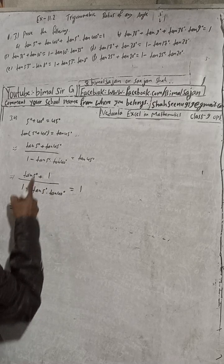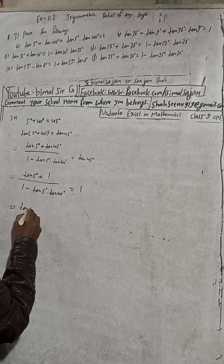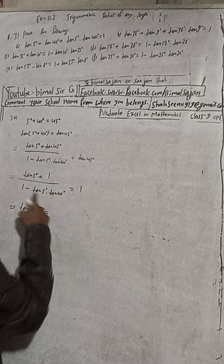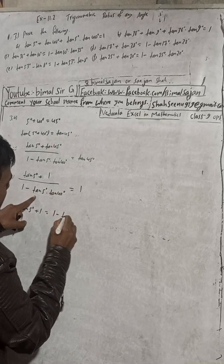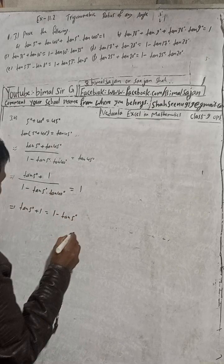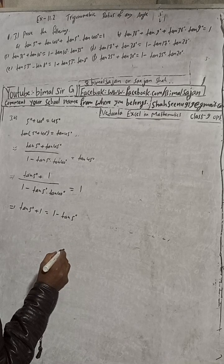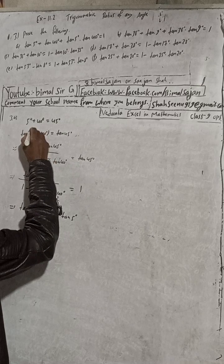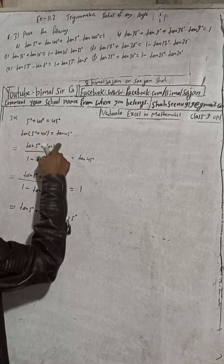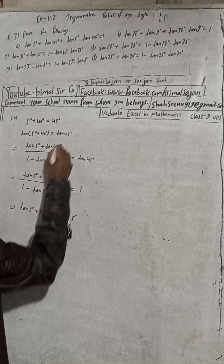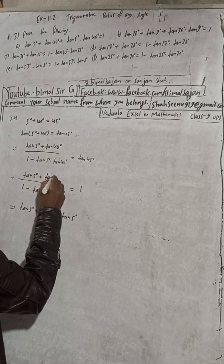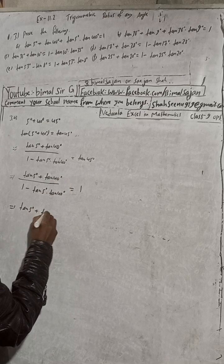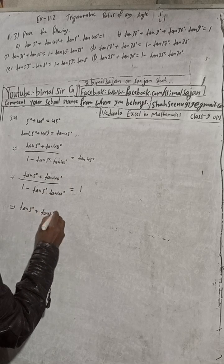After cross multiplying: tan5° + 1 equals 1 × (1 − tan5°·tan40°). Note: this is 40° not 45°, so we have tan5° + tan40° on the left side and tan40° also appears in the denominator.